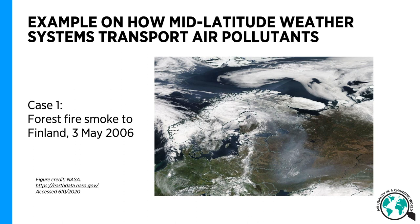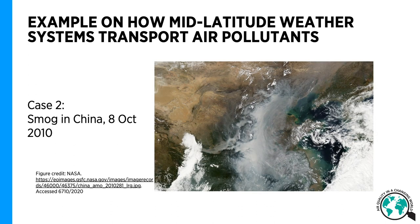Here is an example of a mid-latitude weather system affecting the transport of forest fire smoke from Eastern Europe to Finland, reaching even Svalbard in May 2006, as seen from a satellite. Here is another example of a mid-latitude weather system affecting largely the smog situation in China in 2010.